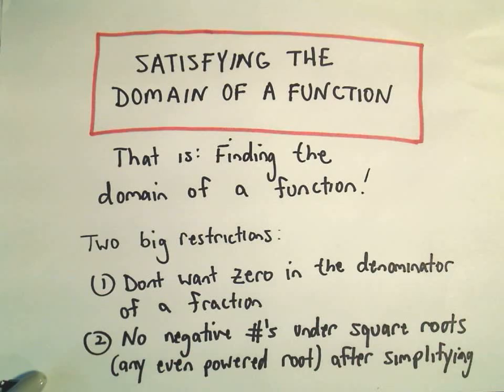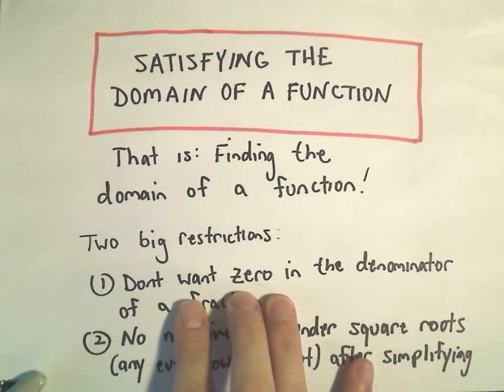Typically any time I see a domain question there's two big things I have to avoid. There's two big restrictions. If there's any fractions floating around, we have to omit any values of x that give us 0 in the denominator, so we'll have to solve that equation.